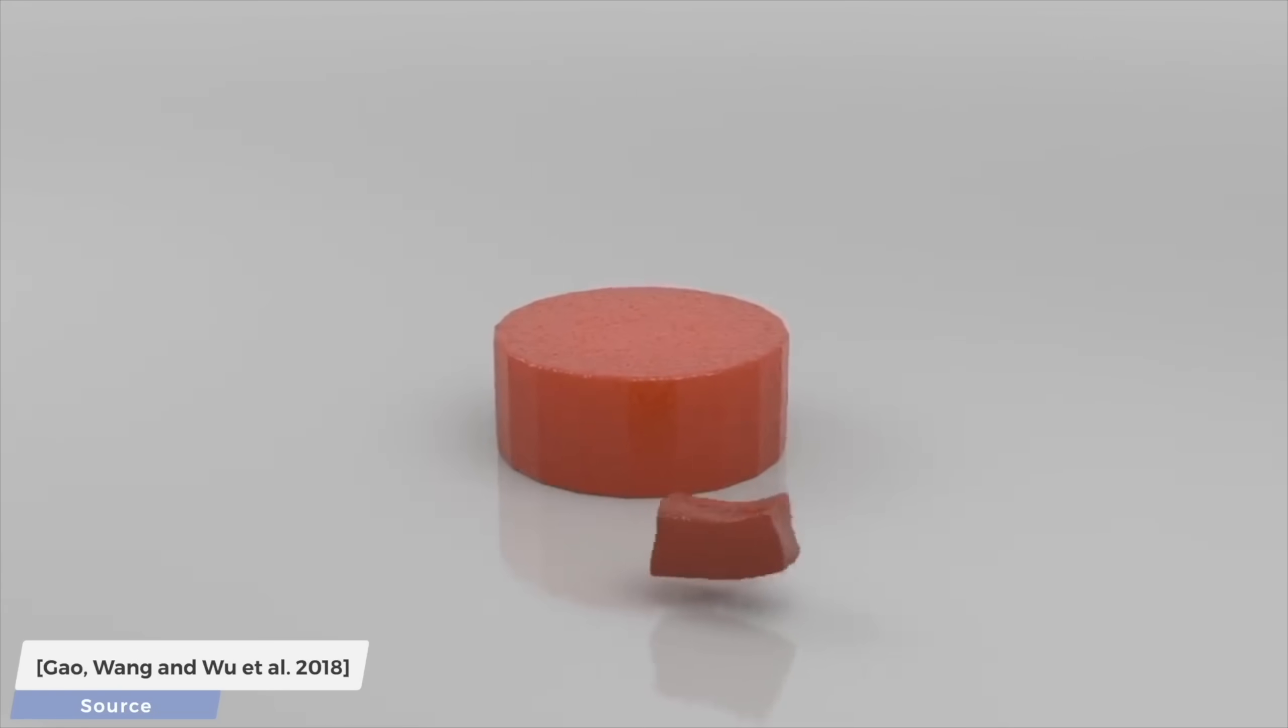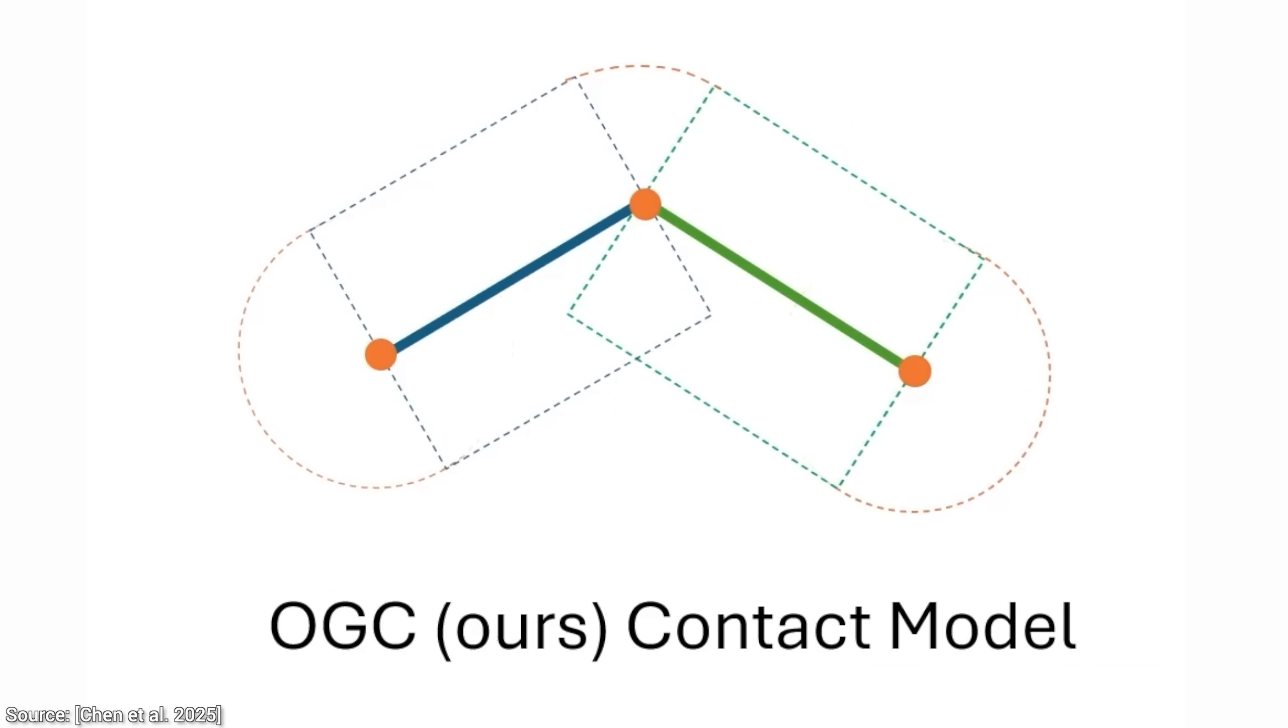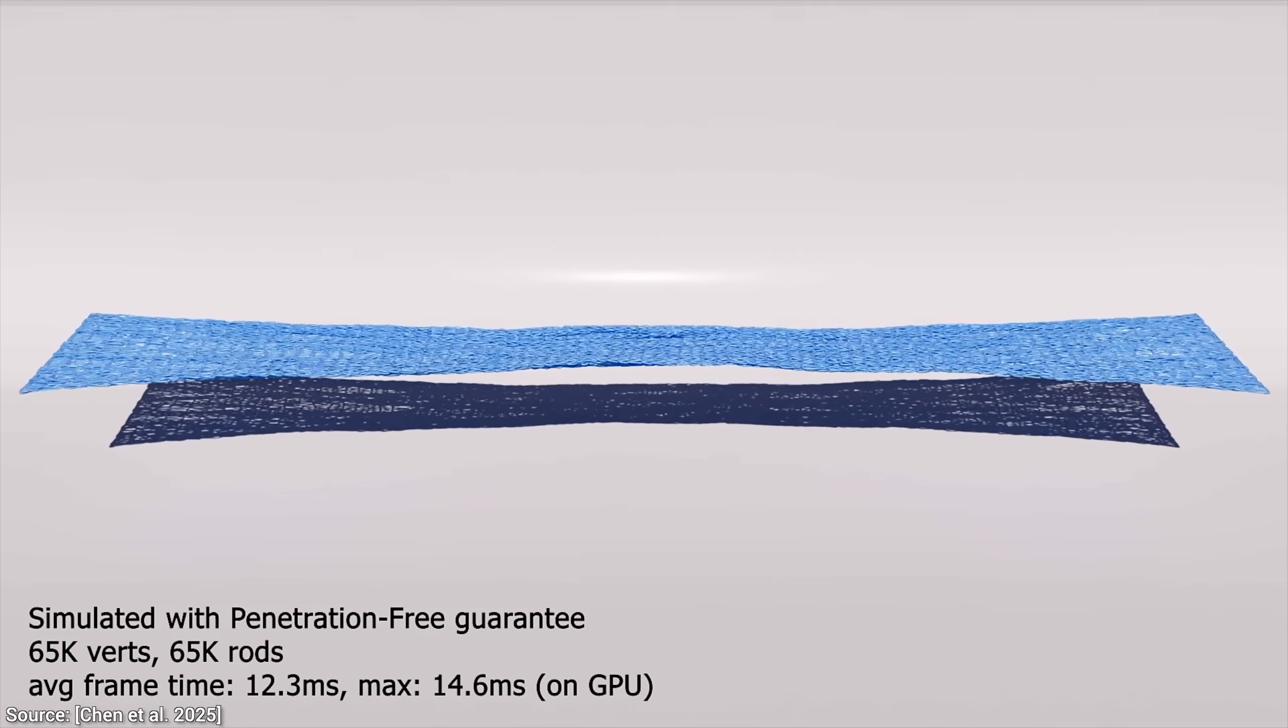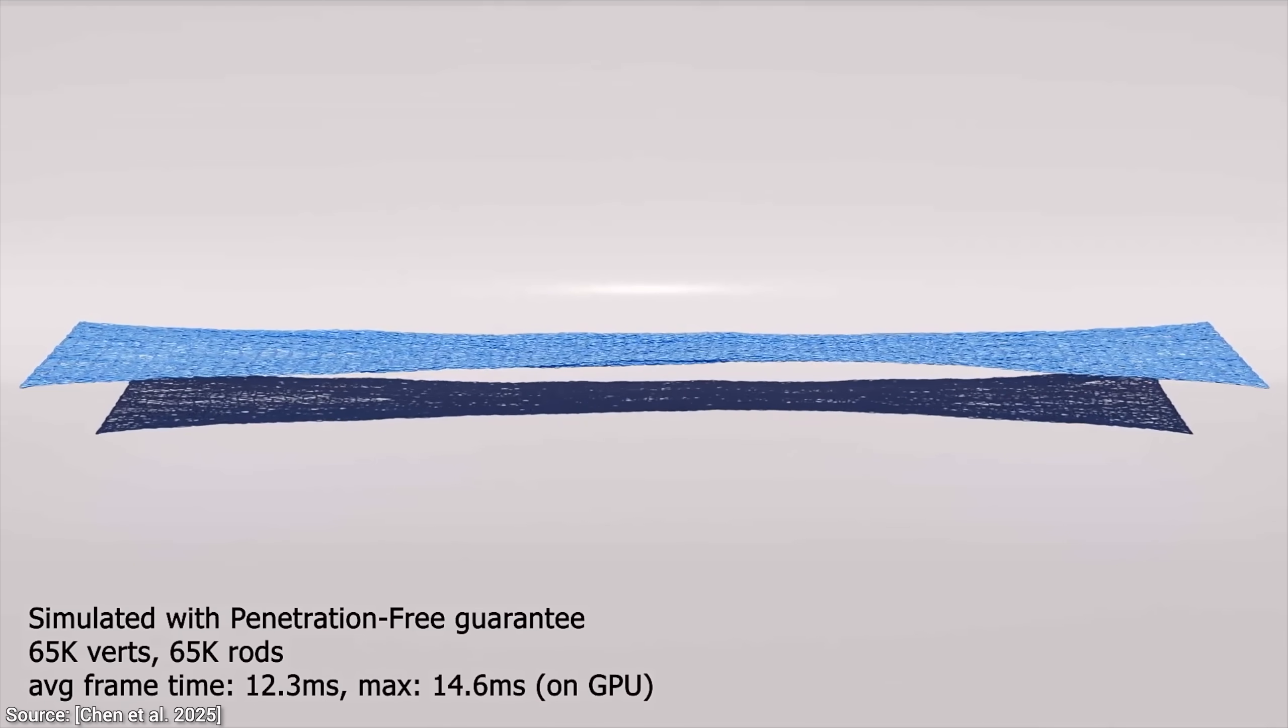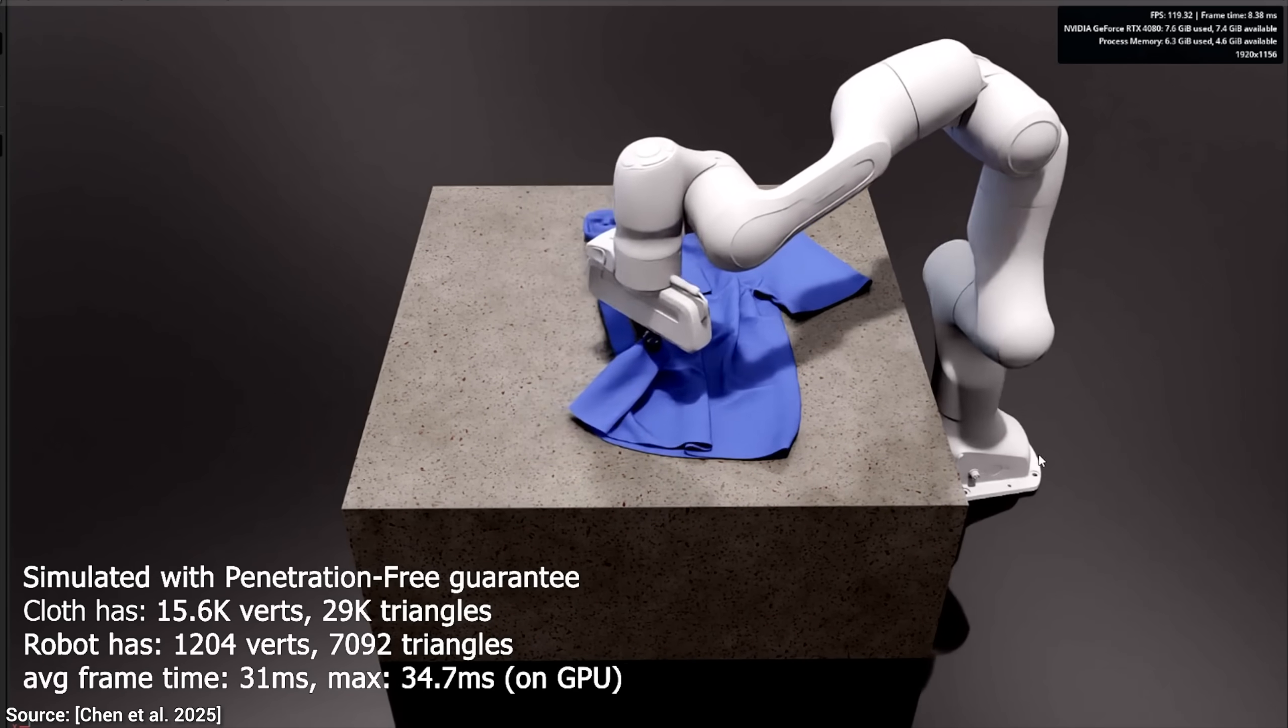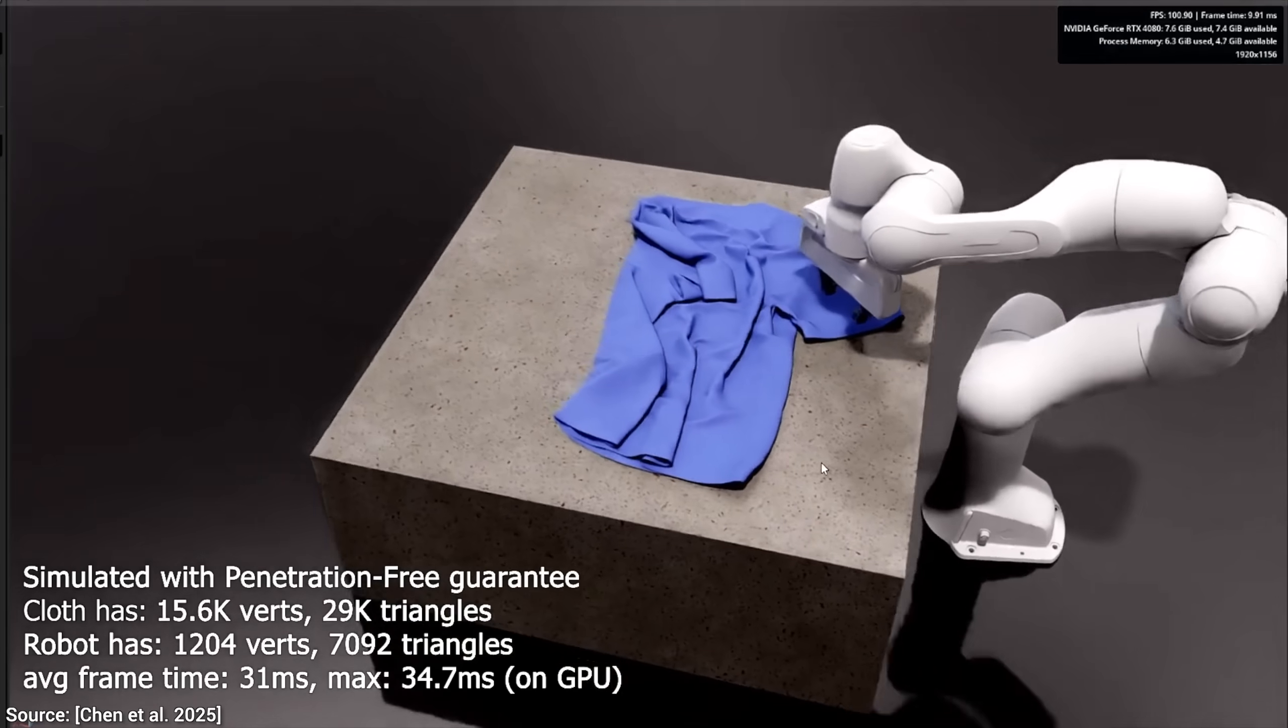So, you see, the algorithm creates an invisible force field around every object. It's like a perfectly fitted suit of armor. And this armor has a special property. It can only push directly outwards, perfectly perpendicular to the surface. So, when two objects get close, their force fields interact and push them apart cleanly, which finally prevents those weird stretching artifacts we saw before.